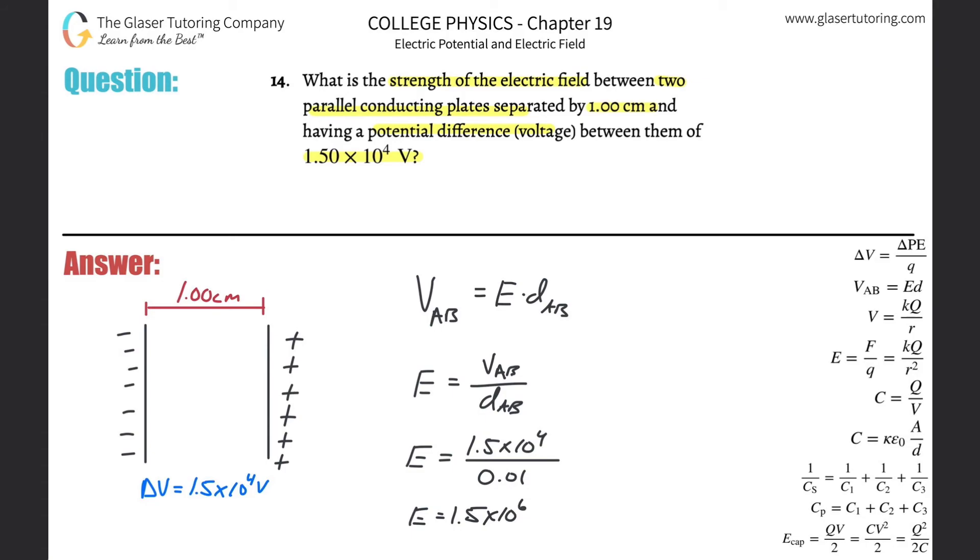And that will be in, what would the units be? Well, they could have a couple of units. Could be newtons per coulomb. In this particular case, it looks like it's volts per meter, but the prior problem proved that they're both identical, so it doesn't matter what you use.